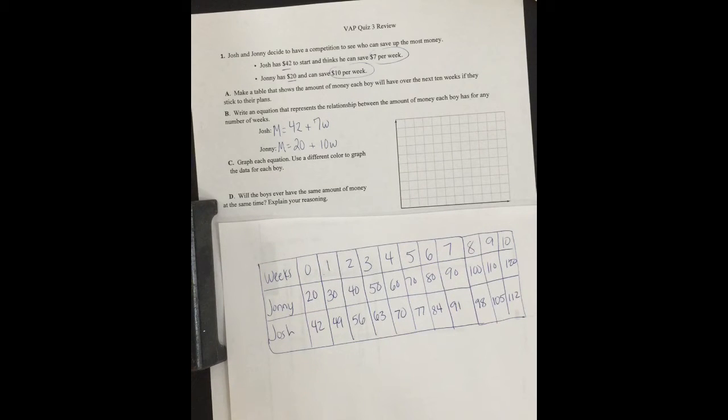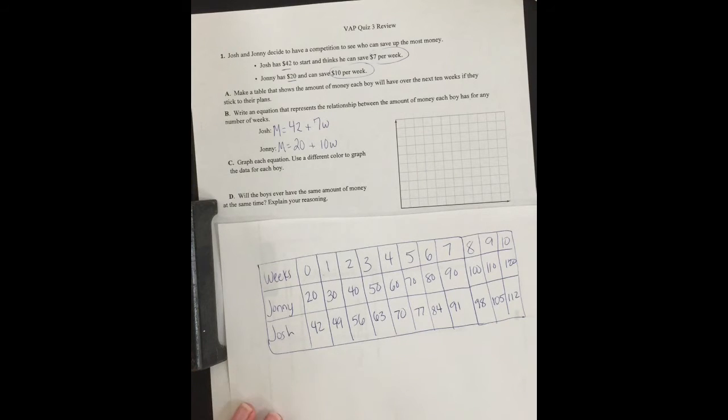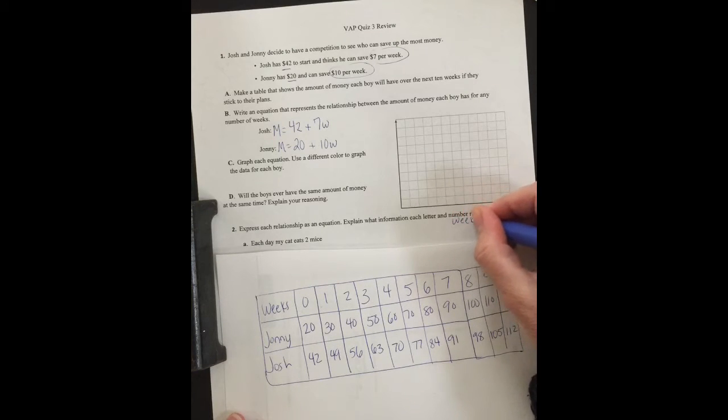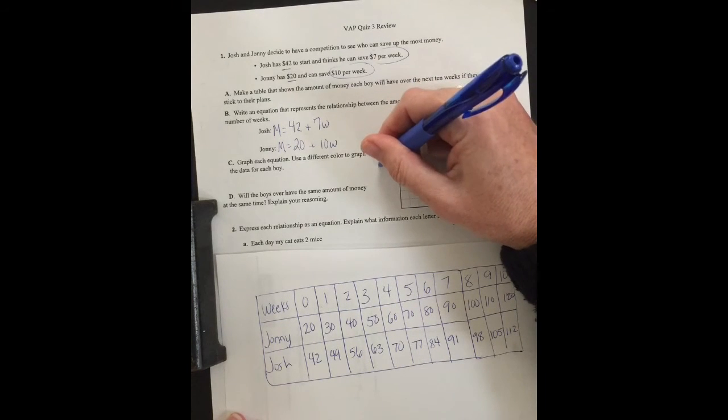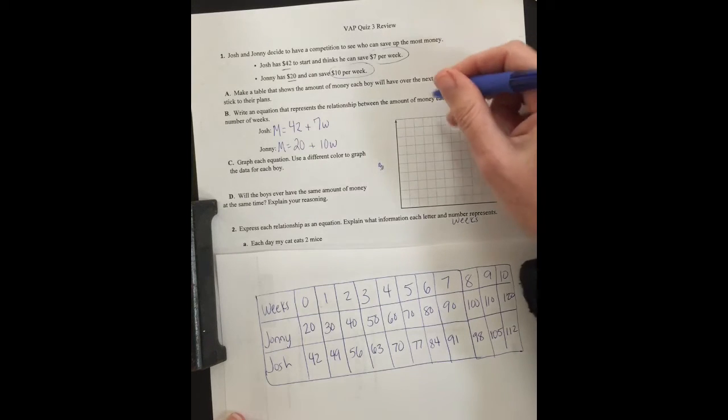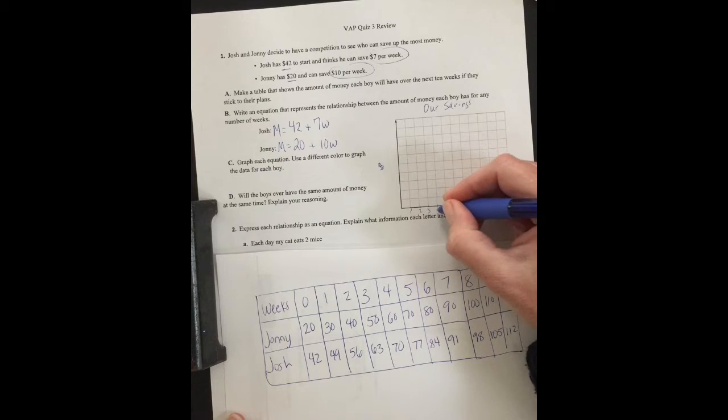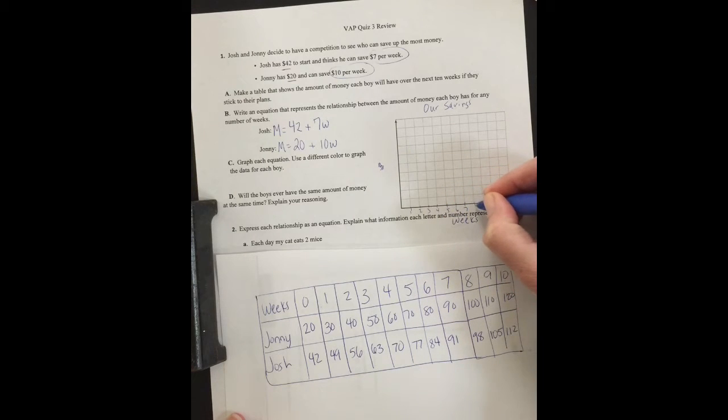Part C: Graph each equation. Use a different color to graph the data for each boy. So we have down here, we would have weeks. Over here, we would have money. We'd have to give it a title, our savings maybe. So then we have week one, two, three, four, five, six, seven, eight, nine, and ten. We could label that zero.